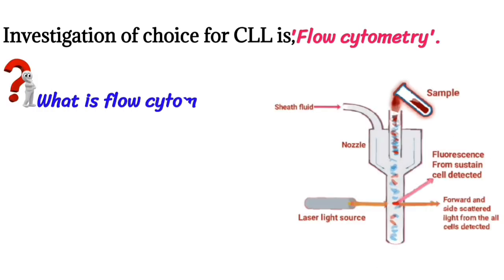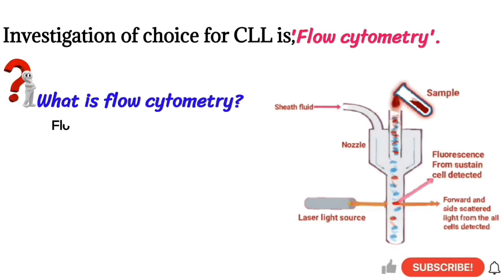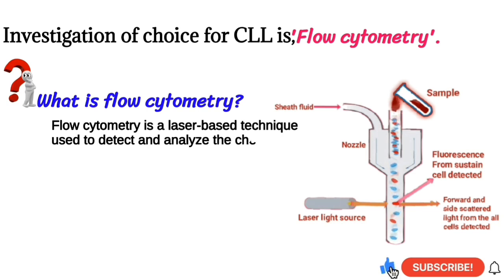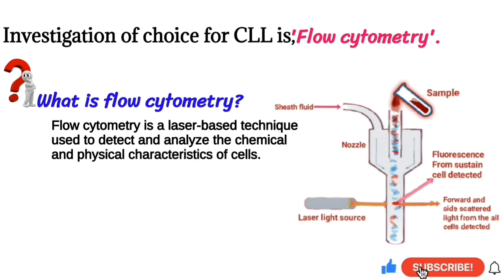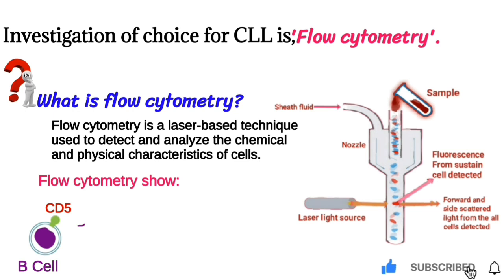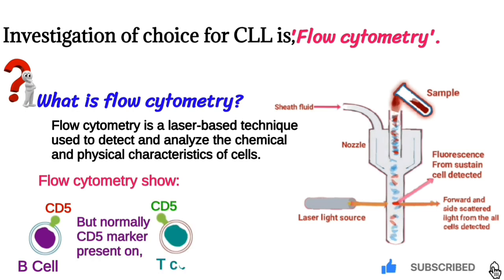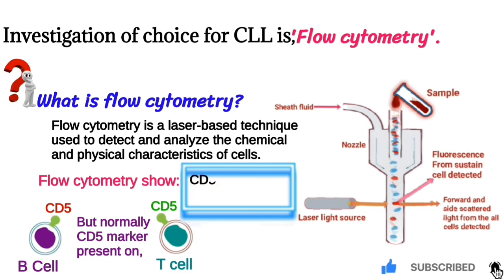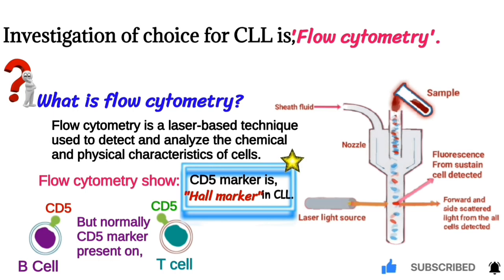The investigation of choice for CLL is flow cytometry. Flow cytometry is a laser-based technique used to detect and analyze the chemical and physical characteristics of cells. In CLL, flow cytometry shows CD5 present on B lymphocytes, but normally CD5 markers are present on T lymphocytes. CD5 marker is the hallmark of CLL.